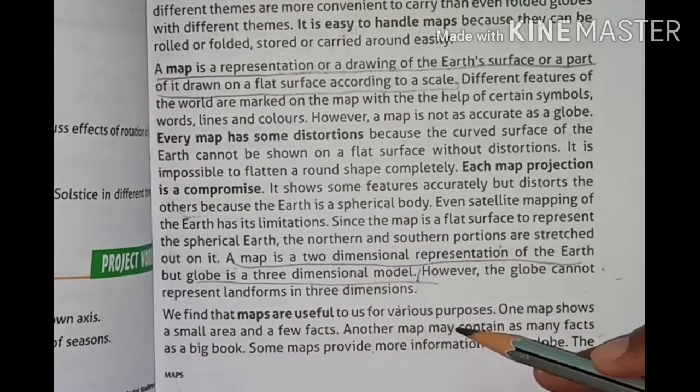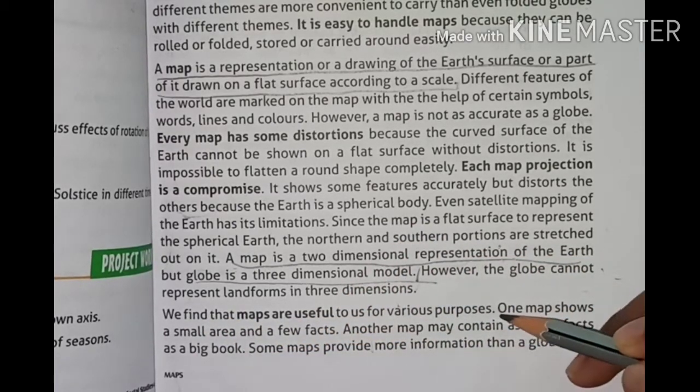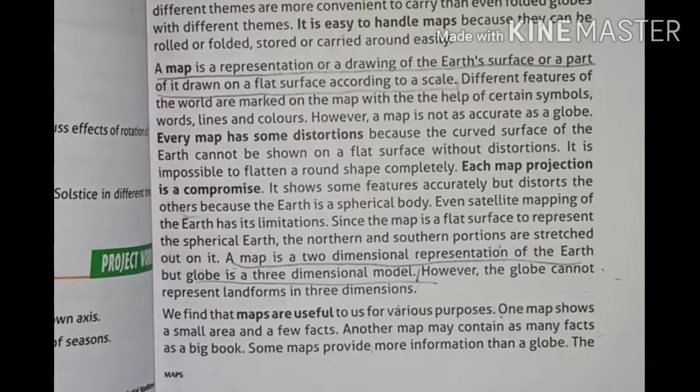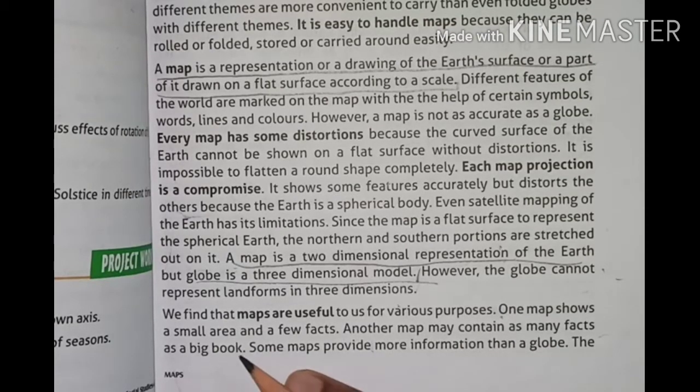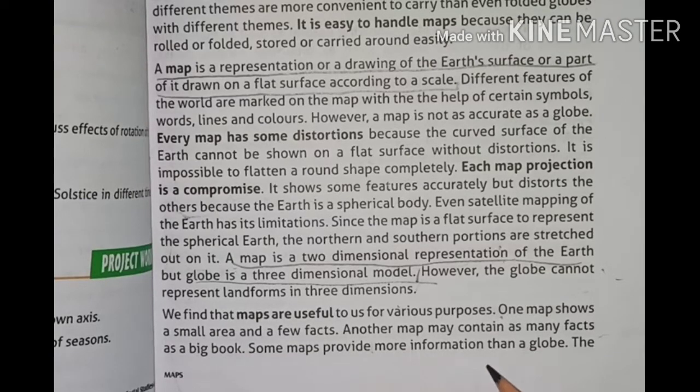We find the maps are useful to us for various purposes. The map shows a small area with few facts. Another map may contain as many facts as a big book. Some maps provide more information than a globe. If you look at the map, one small area will give us some facts. If we collect many different areas, we will collect many different facts. But in the globe, all this information can be provided.